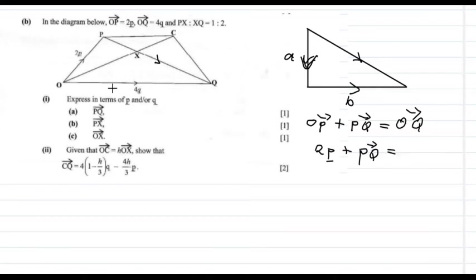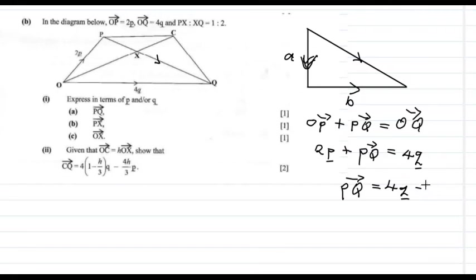OQ is 4q, so we have 2p plus PQ equals 4q. This enables us to find PQ: PQ equals OQ minus 2p, so PQ equals 4q minus 2p. That is the answer for vector PQ.